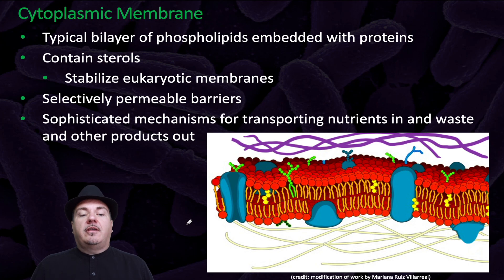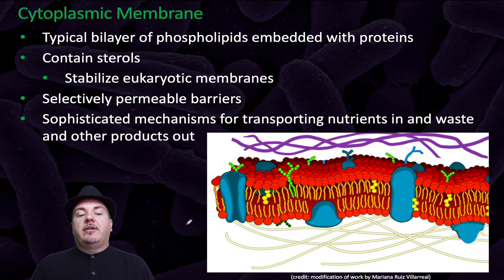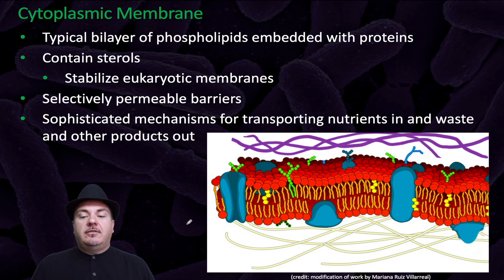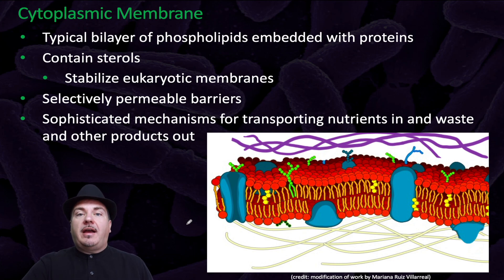All eukaryotic cells have a cytoplasmic or plasma membrane. This is a typical bilayer of phospholipids embedded with proteins. It contains sterols, which stabilize eukaryotic membranes. It's a selectively permeable barrier, which means it lets some things into and out of the eukaryotic cells, but not others. And it has sophisticated mechanisms for transporting nutrients in and waste and other products out.